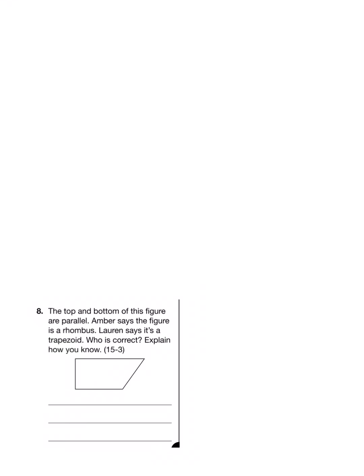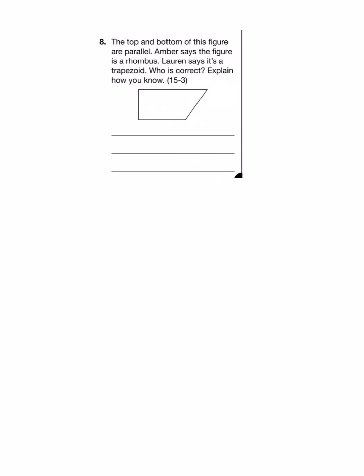Okay, let's go ahead and work on question 8. This says that the top and bottom of the figure are parallel. So we don't have to figure that out, they just tell us that that's the case. We can mark these two parallel line segments with these arrows. Amber says that the figure is a rhombus and Lauren says it's a trapezoid. Who is correct? Explain how you know. This kind of question requires you to write a sentence.